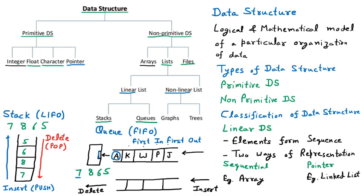If we insert the number seven, it comes into the first space. Then eight, then six, then five — they fill the sequence. Now when we delete, seven will be deleted first, then eight, then six, then five. Seven was inserted first and deleted first as well. So the sequence remains the same — the deletion sequence is also seven, eight, six, five. That is FIFO — first in first out.